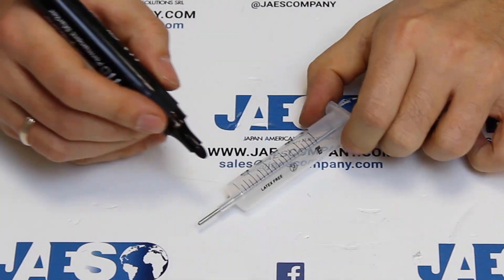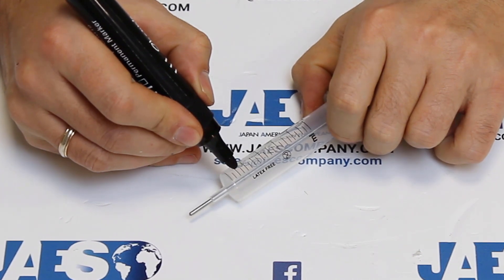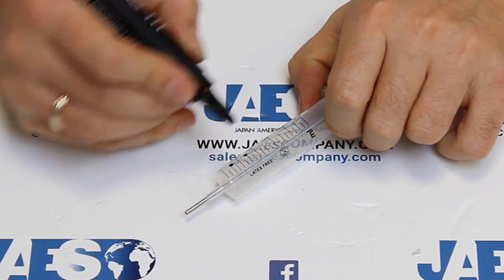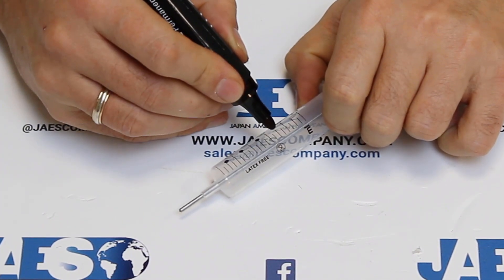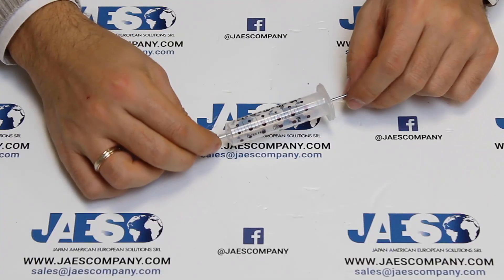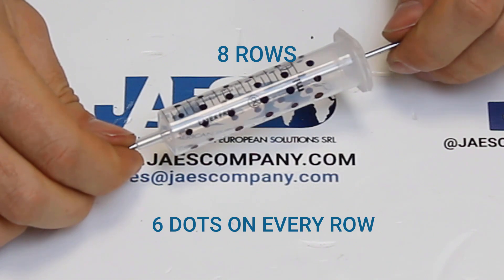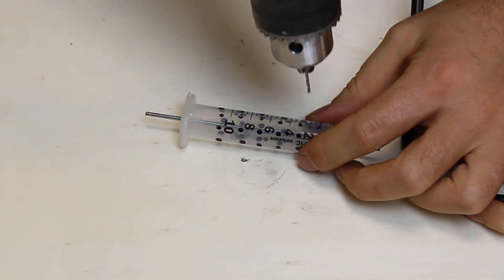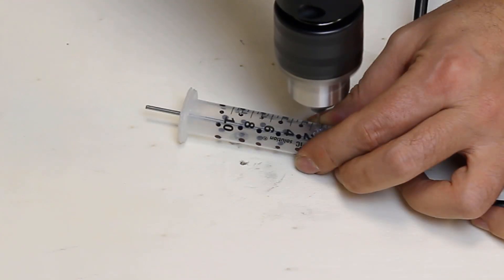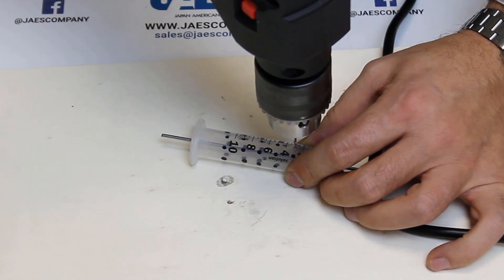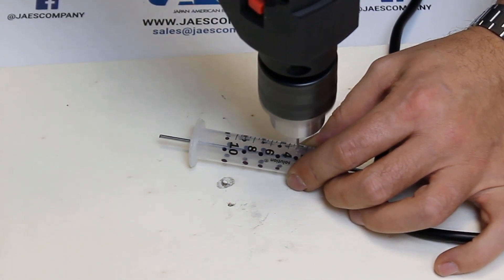Now with a marker, we draw the points where we will drill our syringe. We will create 8 rows of dots, each row must have 6 dots. Let's make sure that the distance between rows and dots are equal. Now we can make the holes.